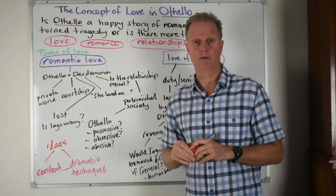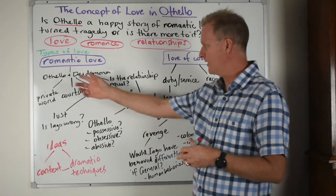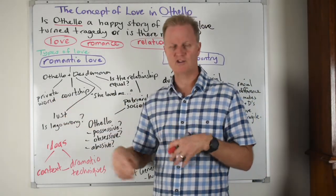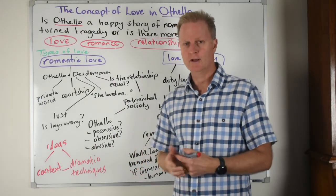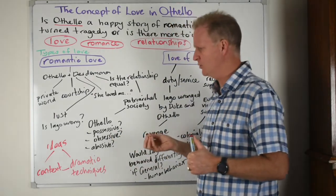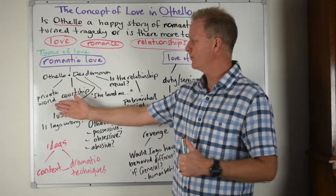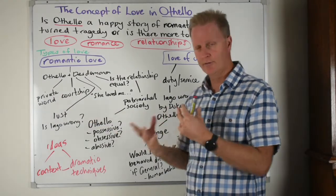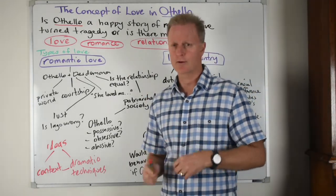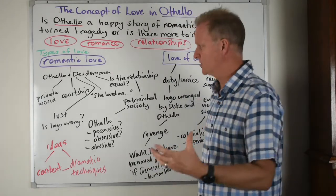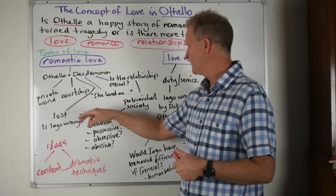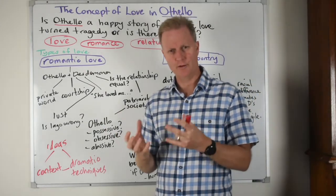One thing we could talk about is romantic love. When we explore that in the play, we could look at Othello and Desdemona and think about how their love is built in the private world. The public Othello — when he's in the public world — he's a general, very successful and confident. But through the play we get to see the other side: the insecure, the man who lacks confidence, the naive and innocent man. We can examine their courtship and what formed the bond of their relationship.